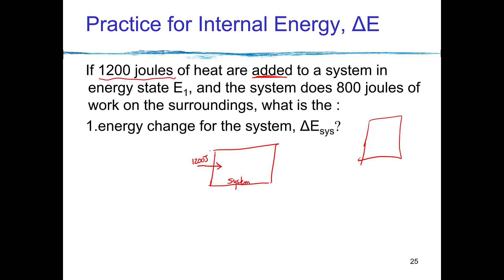And it does 800 joules of work on the surroundings. So if I do work, the system does work on the surroundings. That means that I'm going to use those 800 joules to do something. So I'm going to use those up. And so that's a withdrawal from my system.